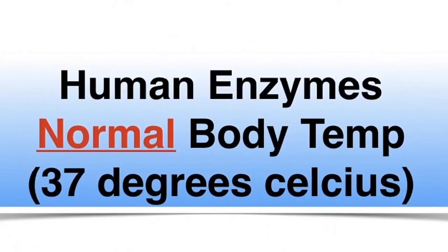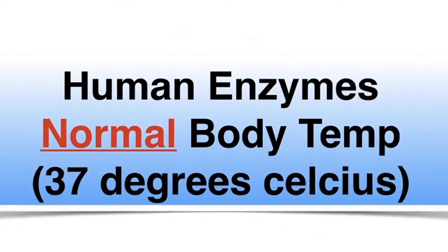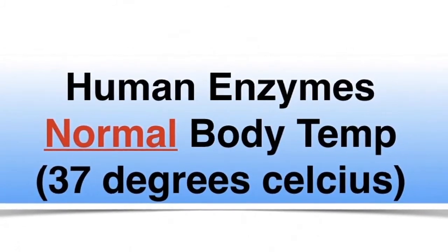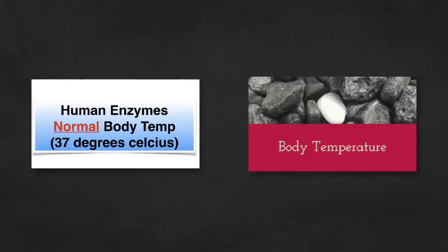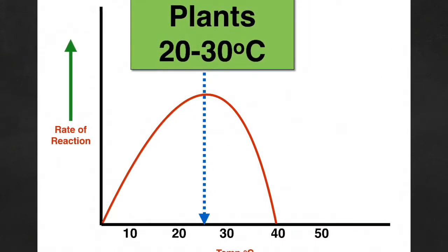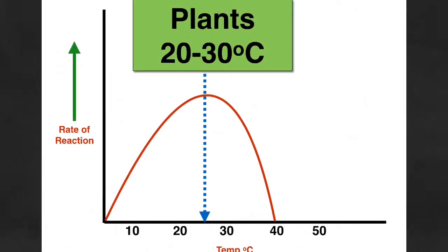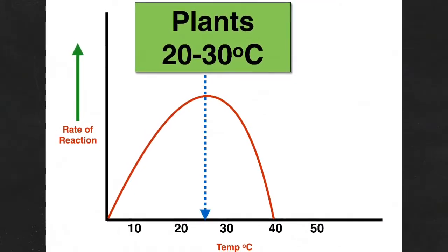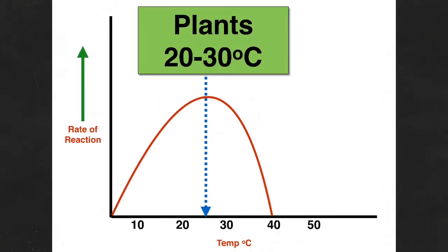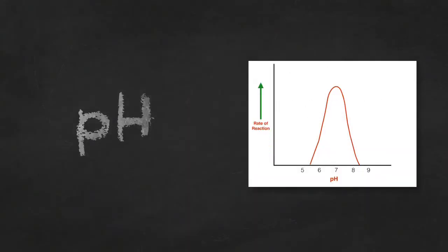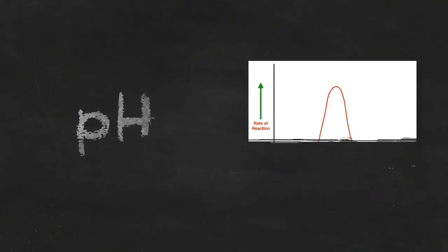Human enzymes work best at normal body temperature and this is generally deemed to be 37 degrees Celsius. Normal body temperature can vary depending on many factors and there's a separate video on this just for your information. If we compare this to plants, plant enzymes have an optimal temperature range of anywhere between 20 and 30 degrees Celsius. Please be aware as well that many enzymes have very different optimal pHs.